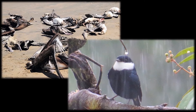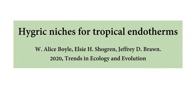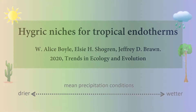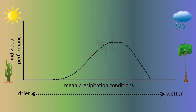In the article "Hygric Niches for Tropical Endotherms," we extend principles from endotherm physiology and ecological niche theory to develop a conceptual framework for understanding the consequences of rain for tropical animals. Across spatial gradients of precipitation regime, we expect individual performance to peak somewhere near the middle of the range of conditions a species can tolerate.